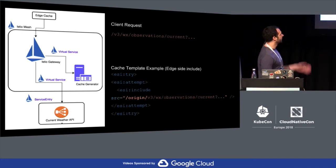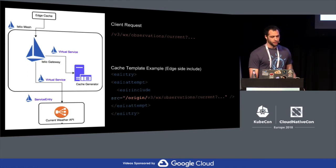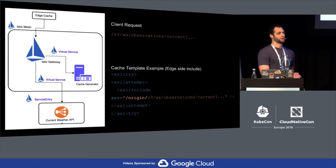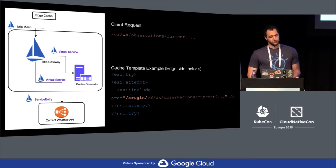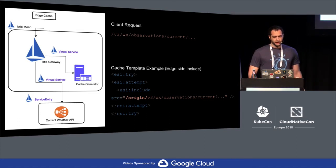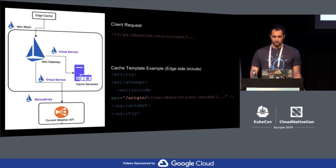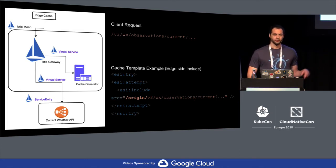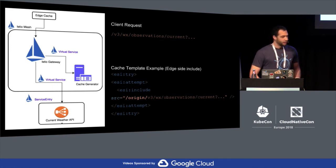On the right side, you can see what the cache generator is actually doing. If somebody calls the current weather endpoint — V3WX observations current — the cache generator changes that URL and adds slash origin in front of it. So if it makes a second request, we know by path-based routing that it needs to go to the backend. On the way out, we rewrite it back to its original URL so the backend team doesn't actually need to care what we're doing internally.